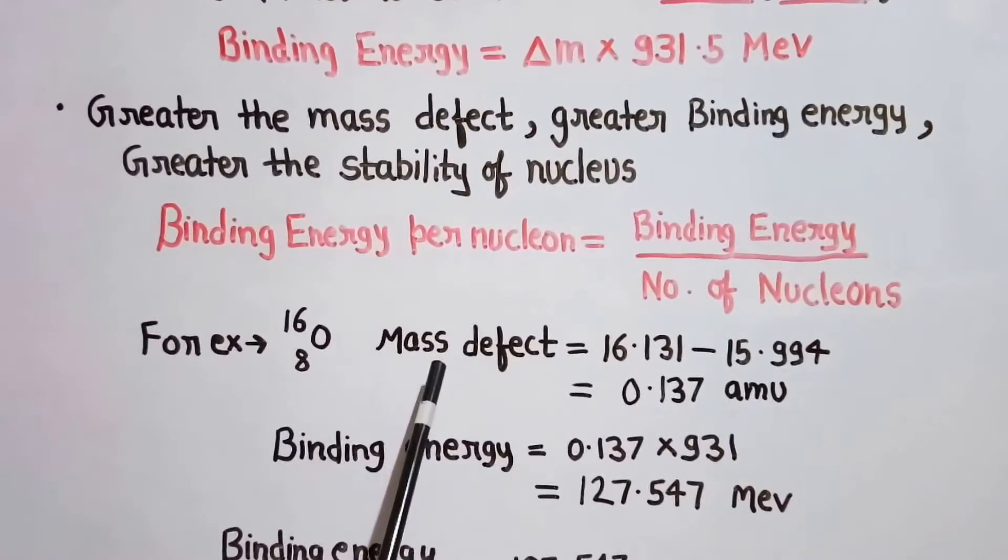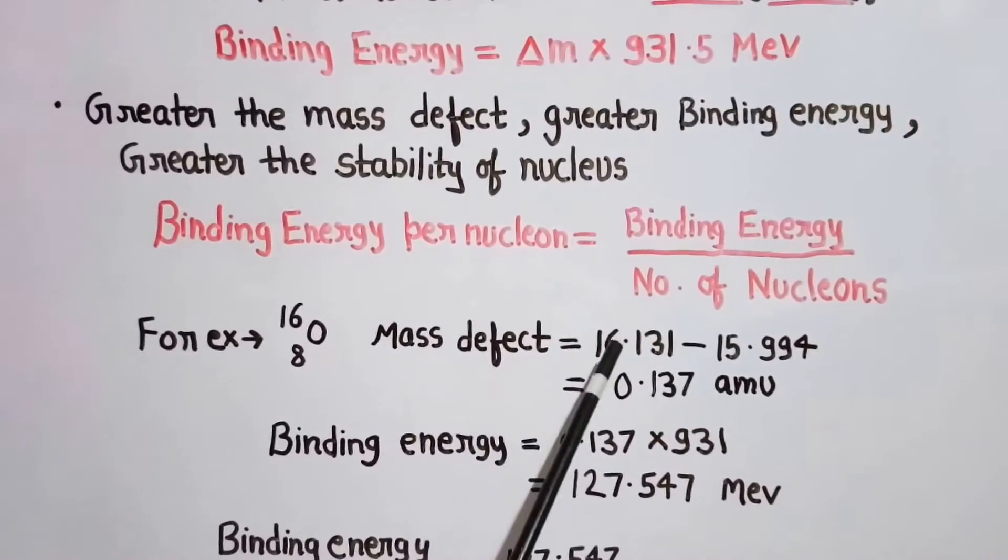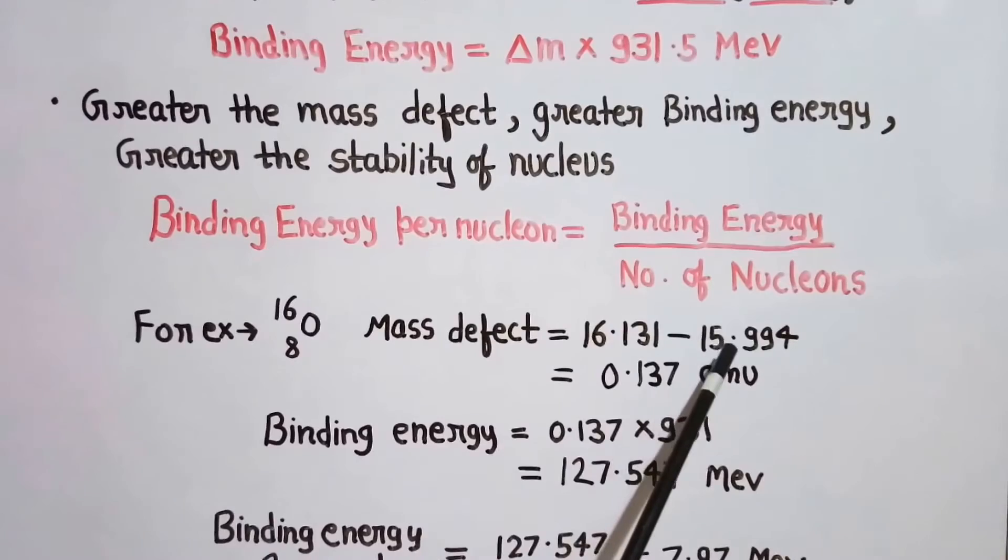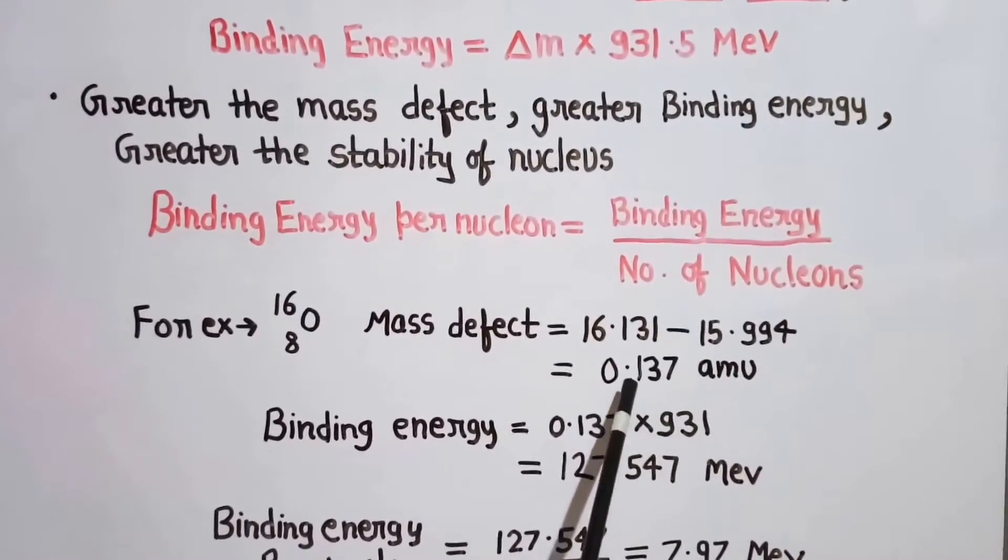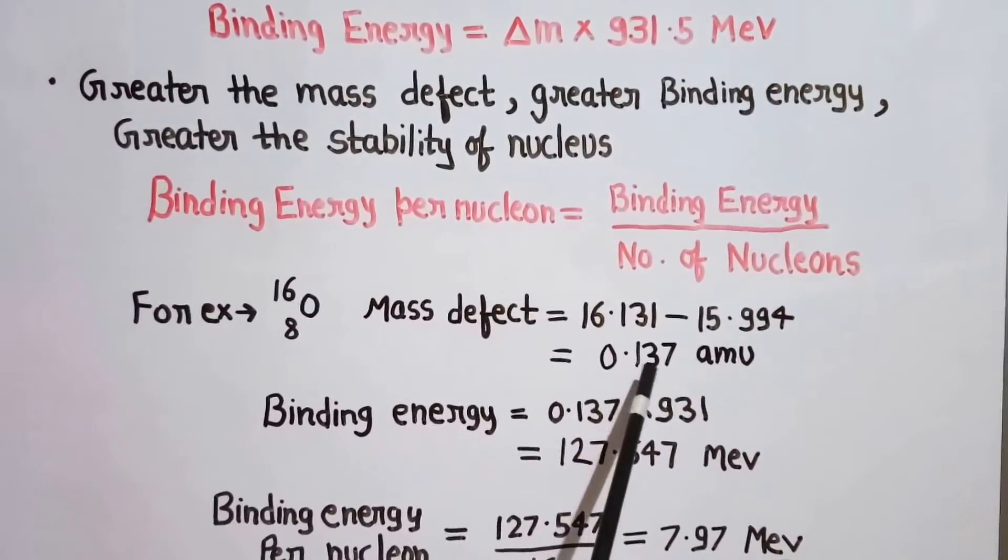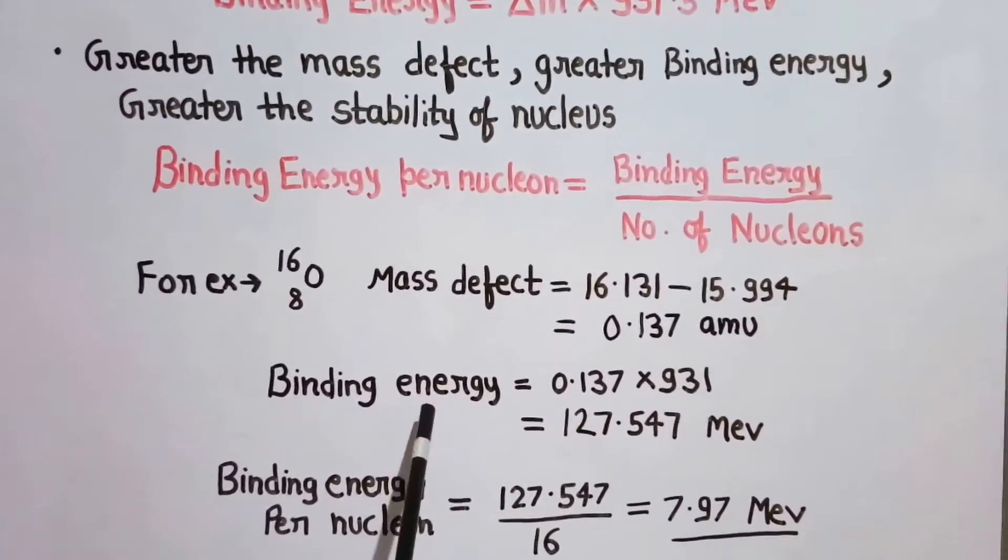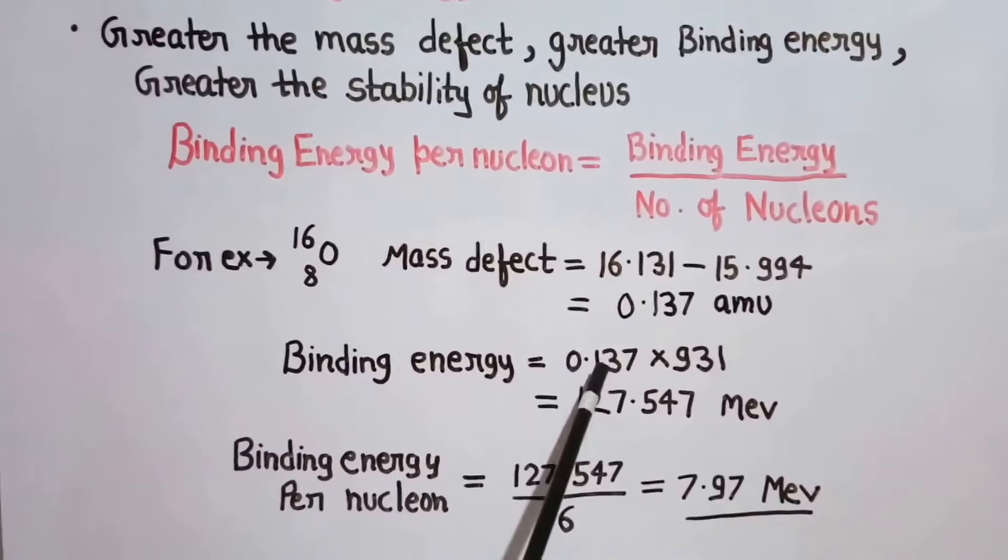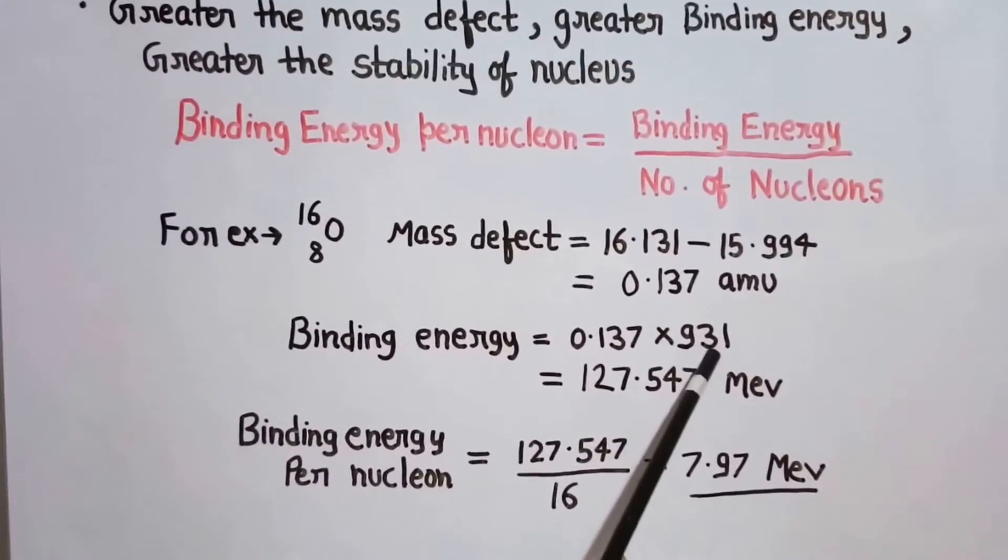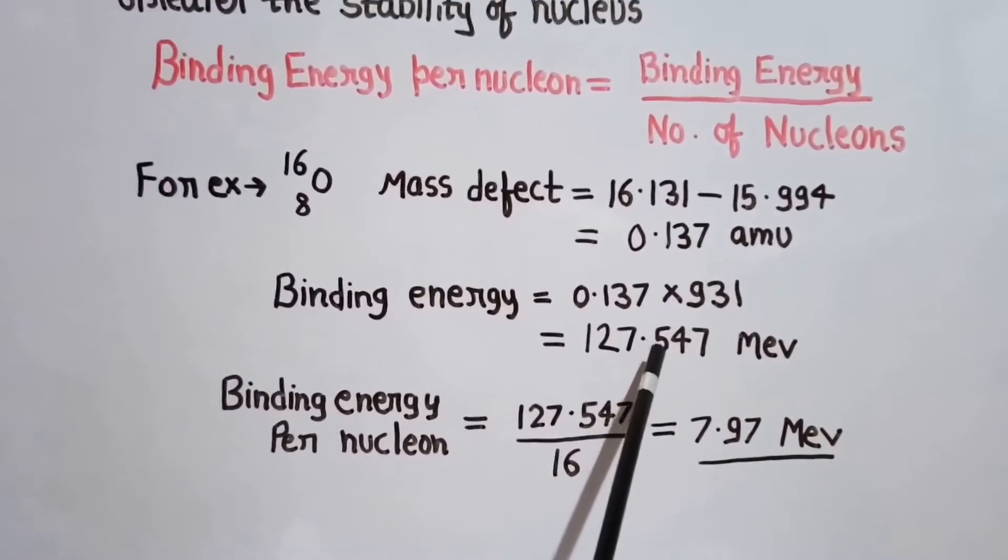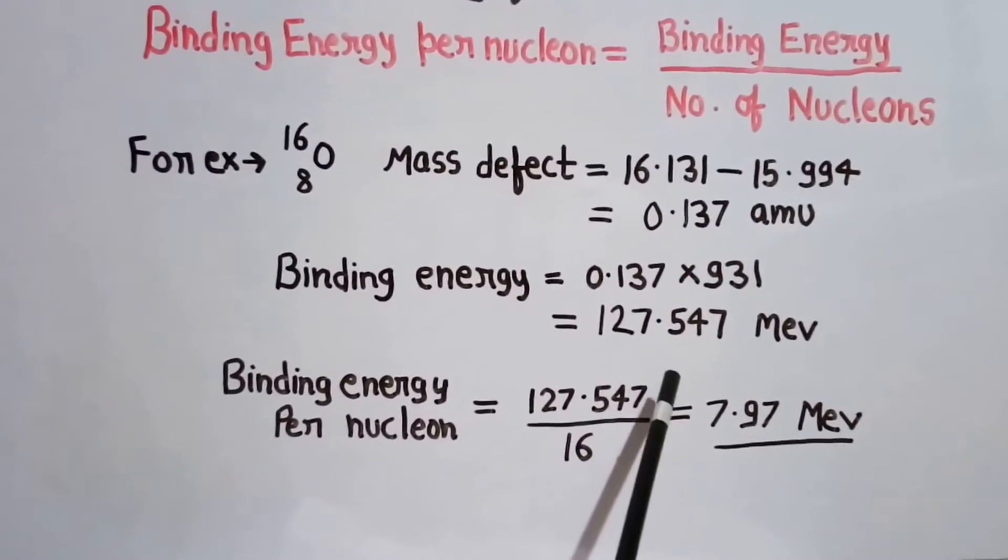For oxygen, the mass defect will be equal to the sum of mass of the particles minus the actual mass of atom, and hence it will be equal to 0.137 amu. And the binding energy will be equal to 0.137 into 931, equal to 127.547 MeV.